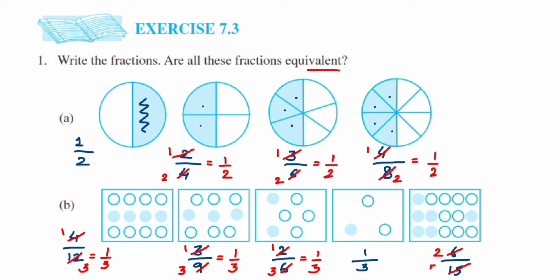For six upon fifteen, we cancel in the three table: three twos are six, three fives are fifteen — which gives two upon five. So the first four fractions are equivalent, all giving one upon three, but the last fraction gives two upon five. Therefore, these fractions are not all equivalent — two upon five is not equivalent to one upon three.